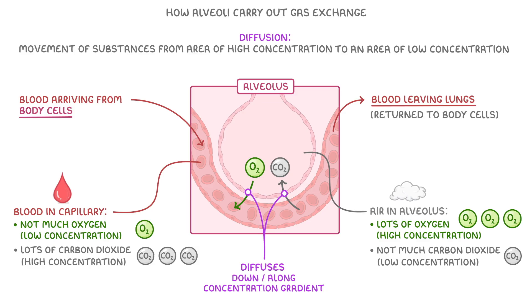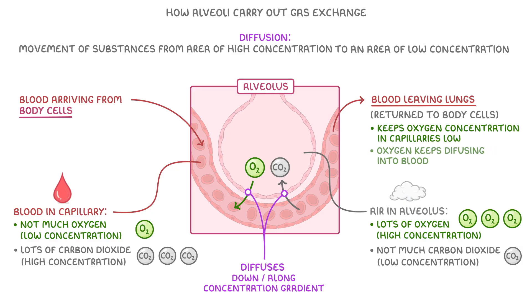The blood vessels leaving the lungs carry oxygen away to the body cells, and this keeps the oxygen concentration in the capillaries low around the alveoli, so oxygen can keep diffusing into the blood.